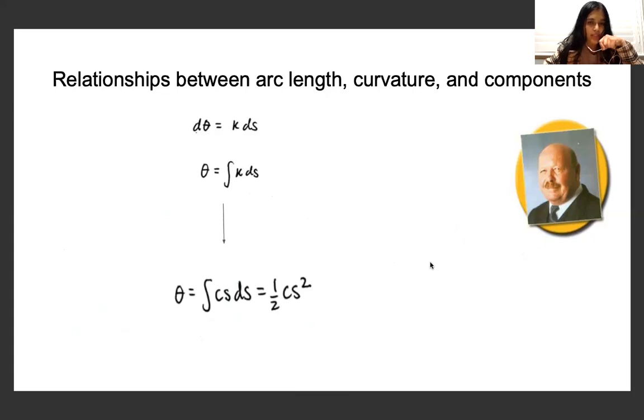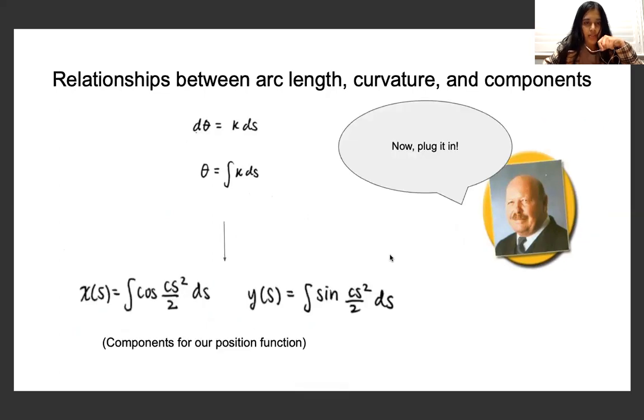Now that we know that θ = 1/2 CS², we can substitute in 1/2 CS² wherever we have θ in the other functions. Which gives us our components, which are as follows. And these are the components for our position function with respect to arc length.